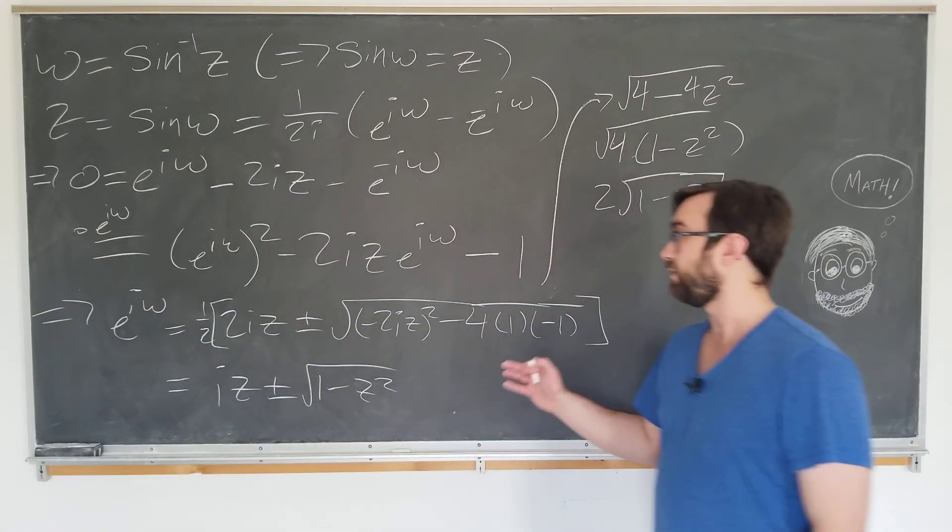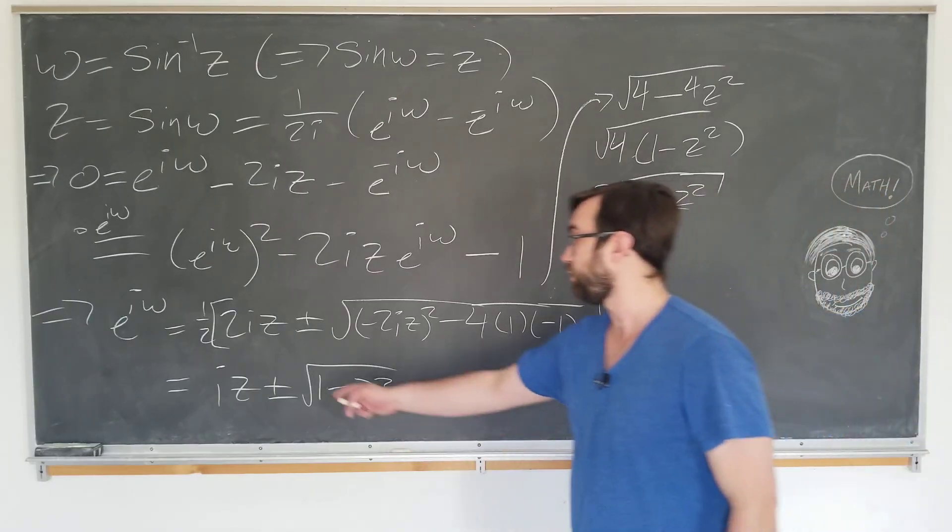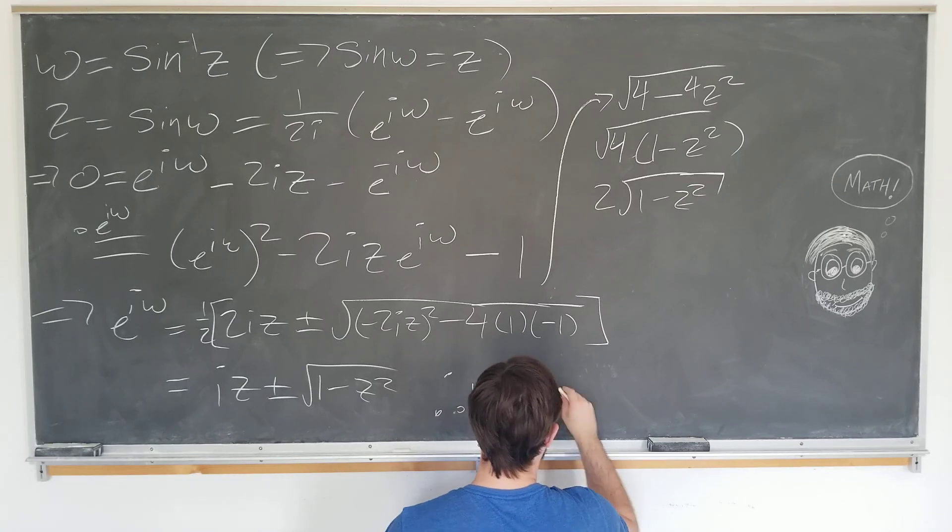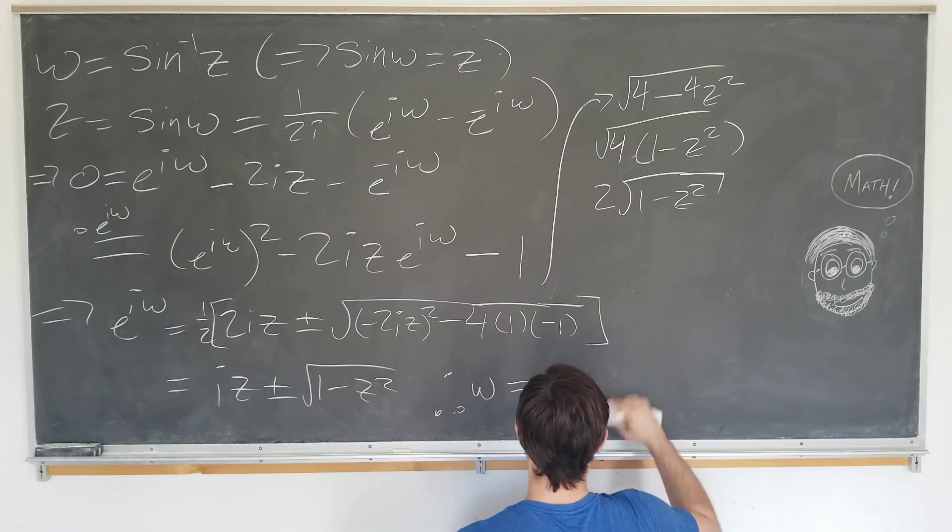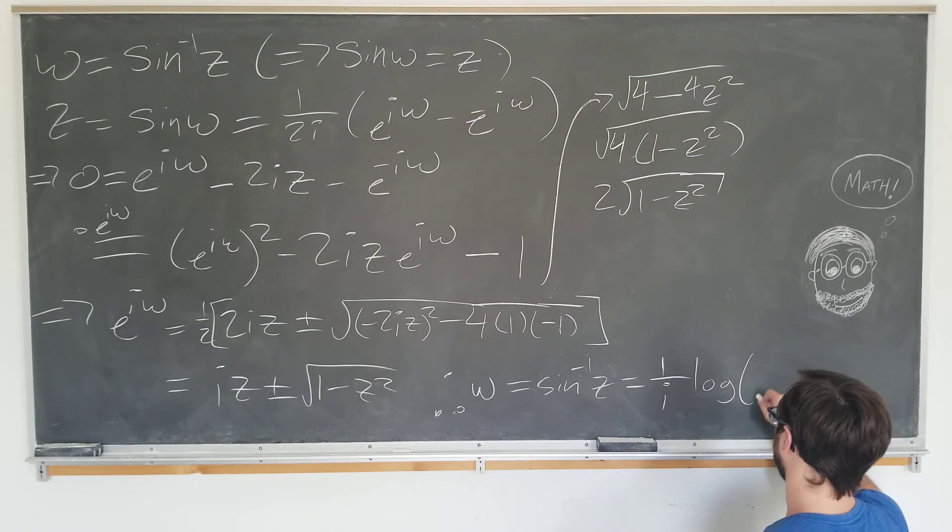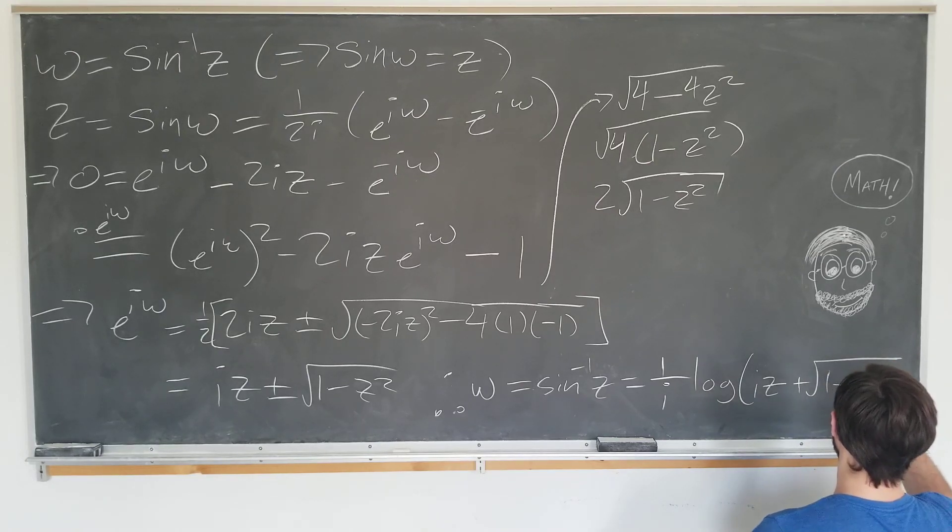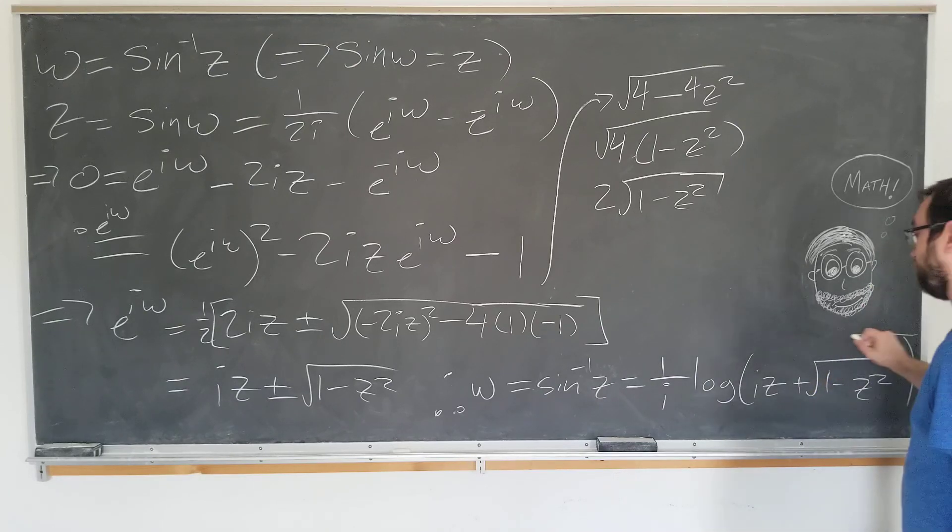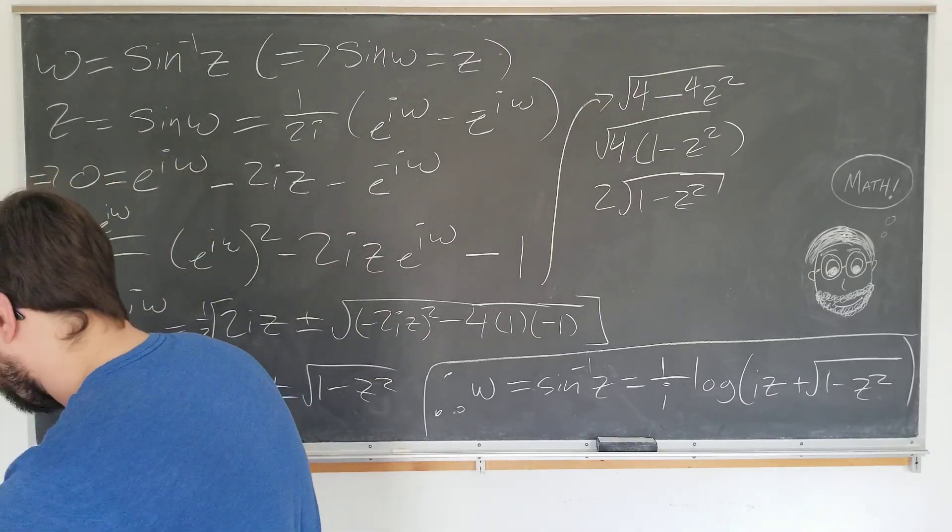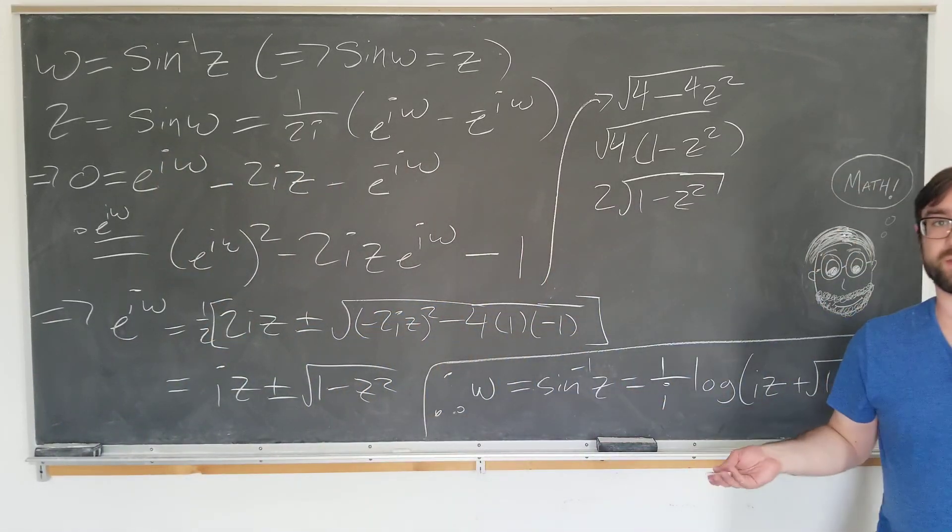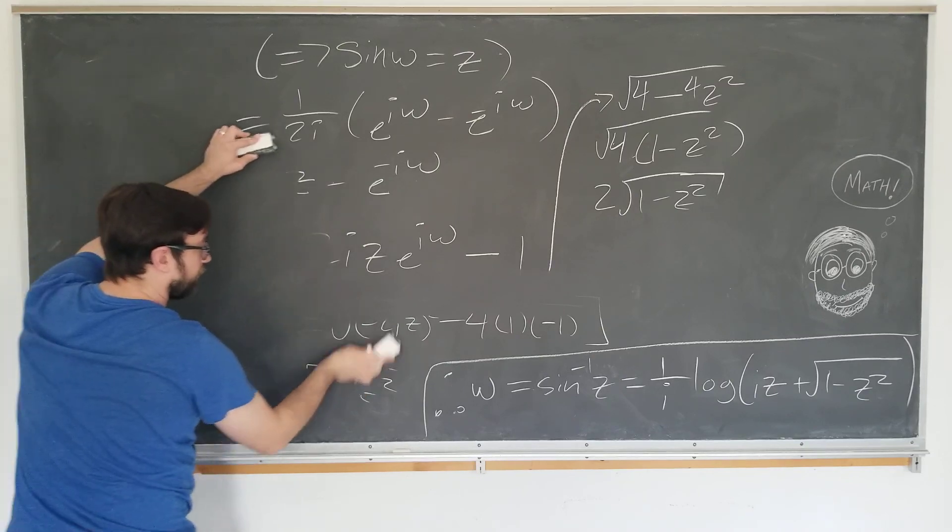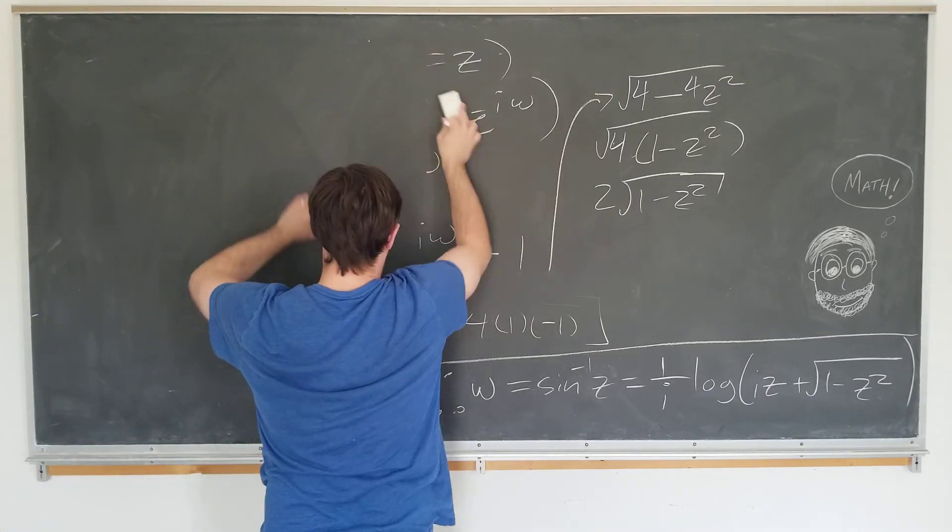So it's just i z plus or minus the square root of 1 minus z squared. And now for the final answer, we are going to take the logarithm of both sides, divide by i, and choose the positive root to have the principal branch. So our final result is w equal to inverse sine of z equals 1 over i log of i z plus the square root of 1 minus z squared. This is the answer that we seek. But what does this tell us? This just looks like a funny formula. Well, as before, we're going to apply it to a few simple examples, show that it reduces to what we think it should, and then finally use it to solve for the inverse sine of 2.